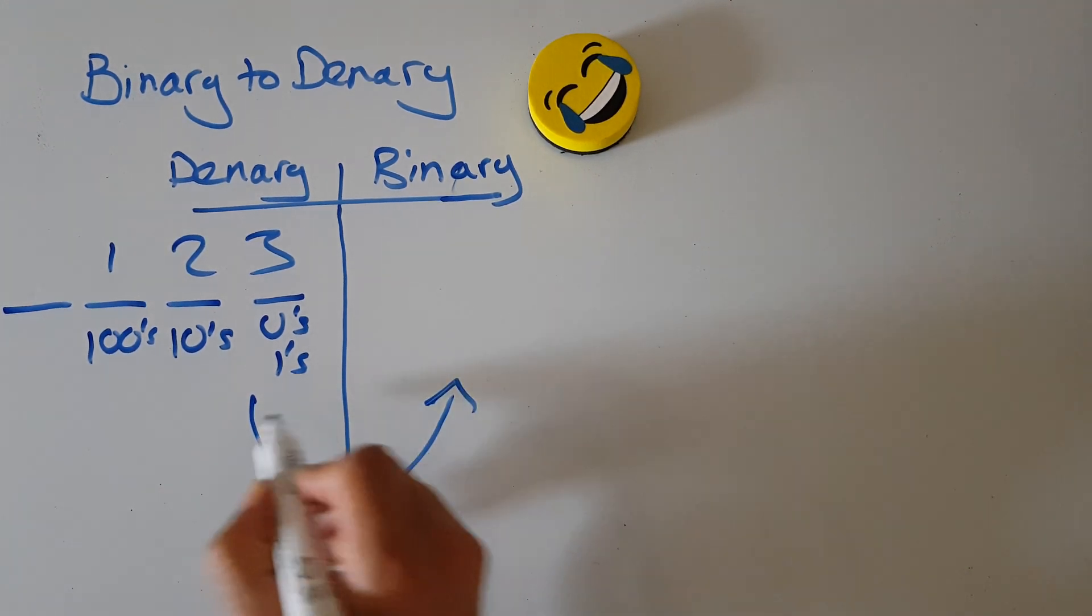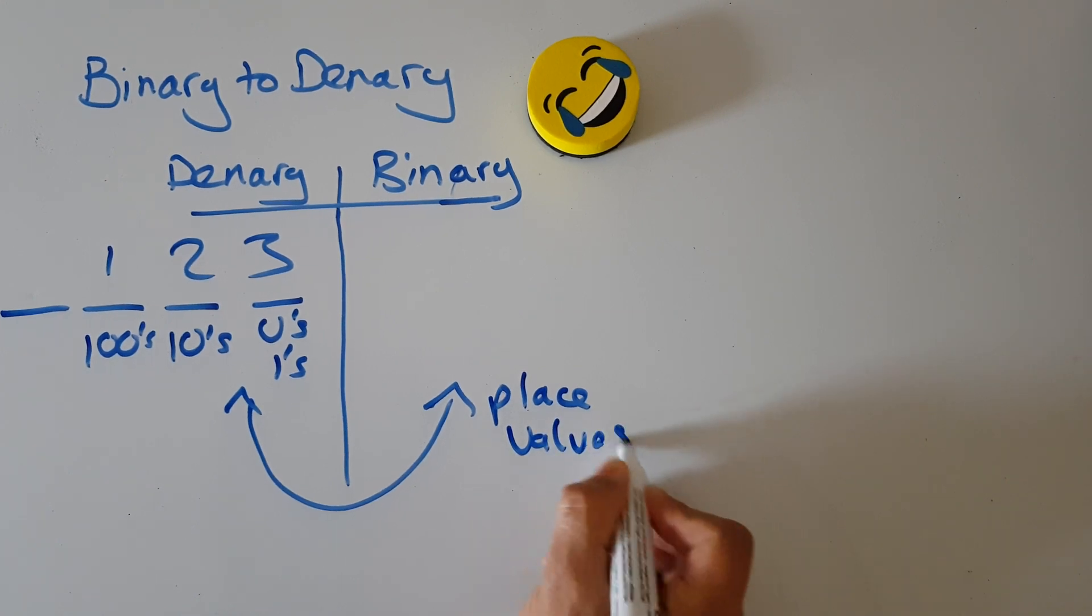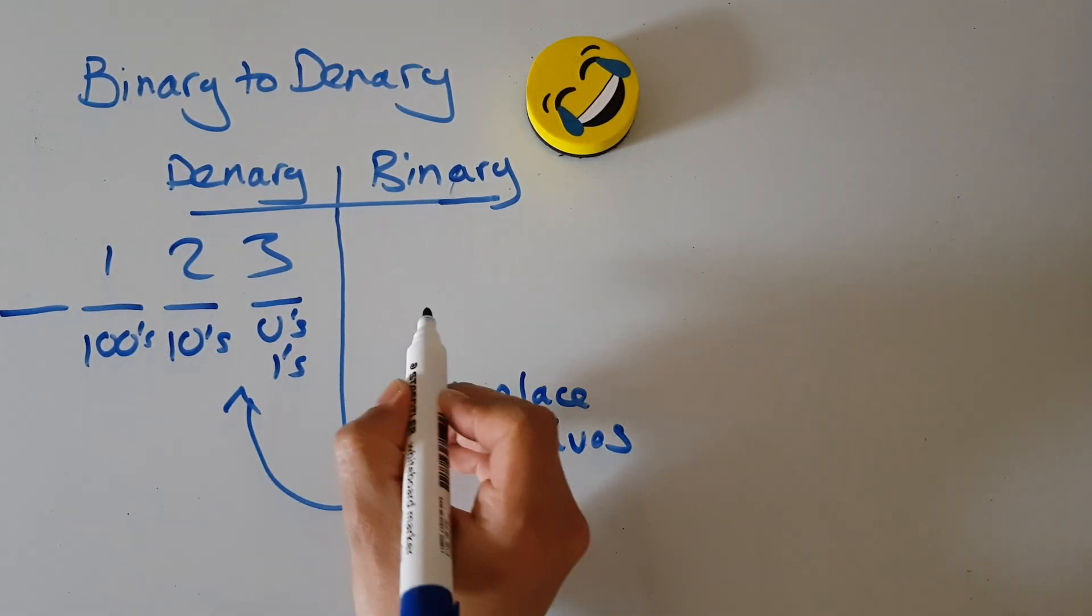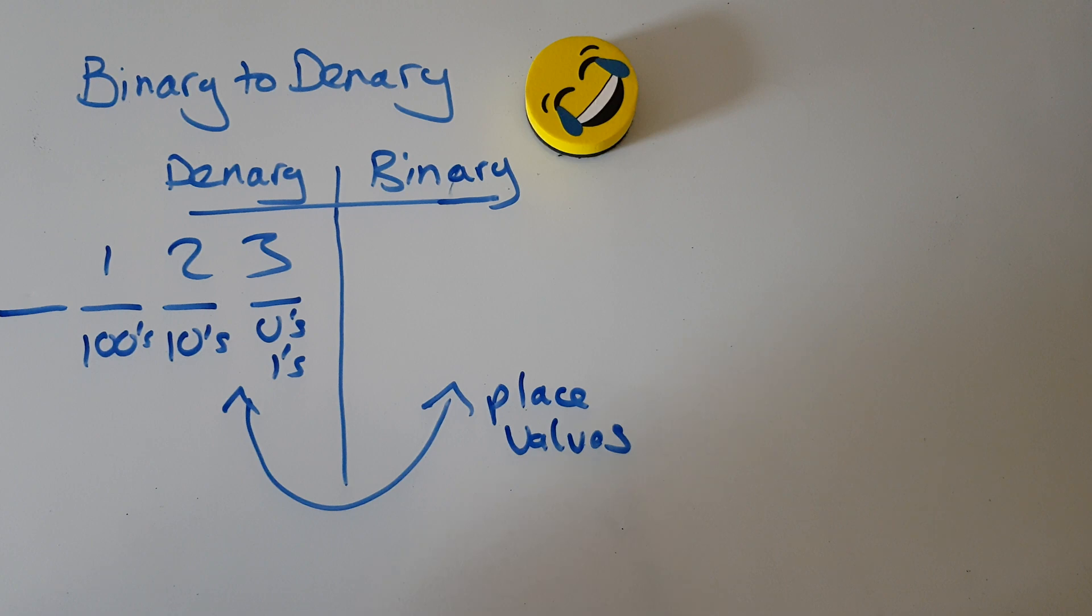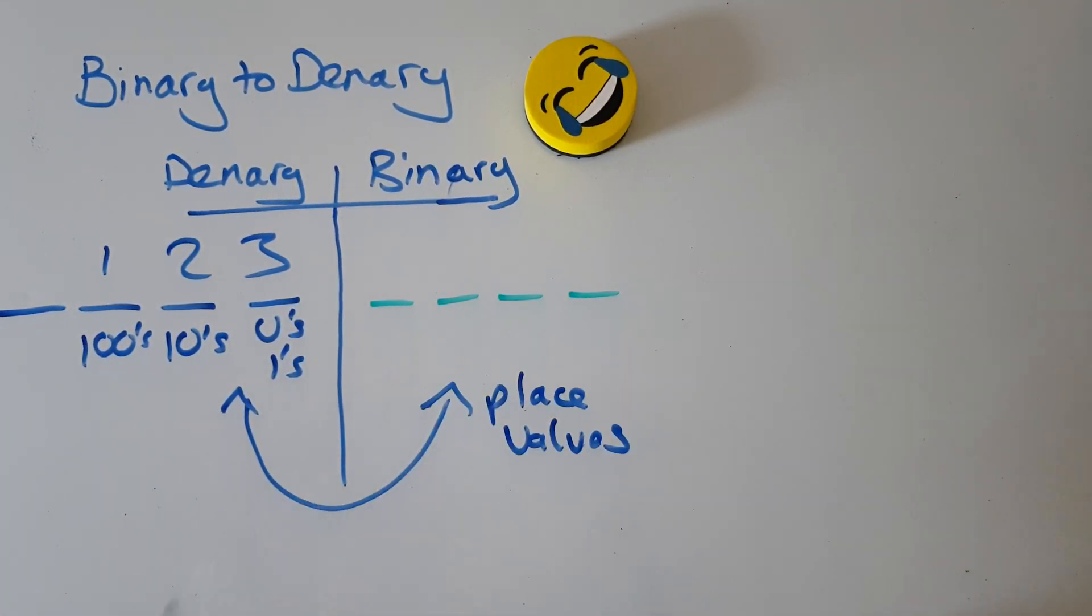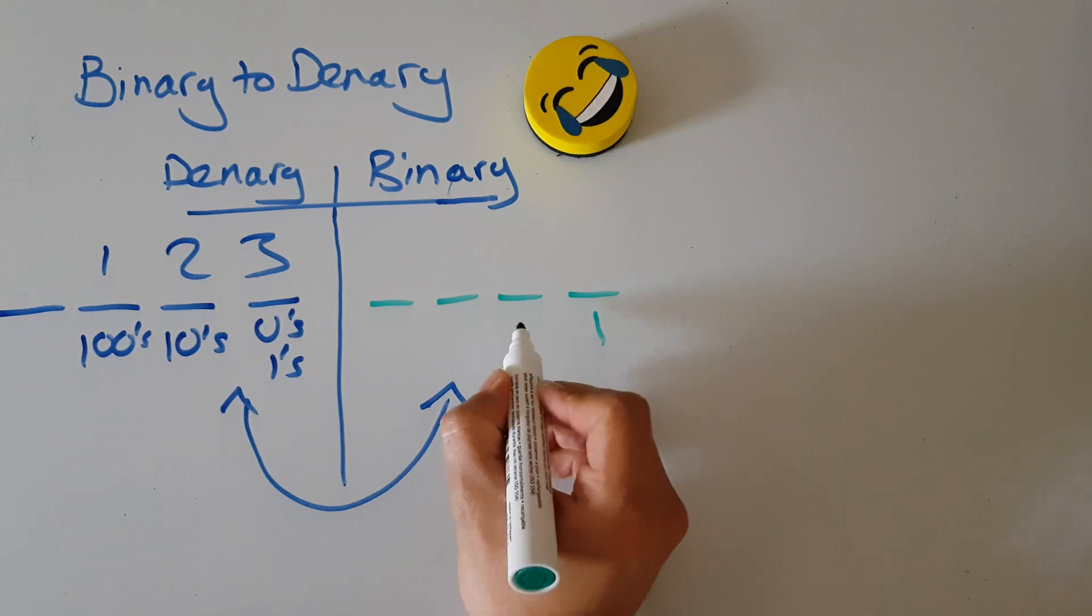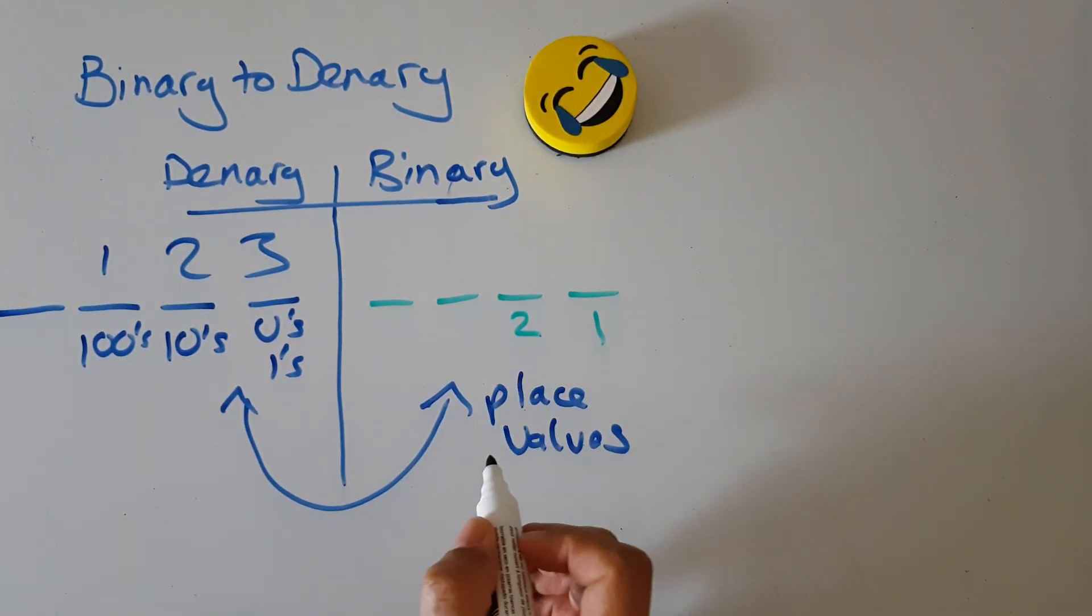Binary also has place values, but not the same ones. Here are the place values in binary: quite simply, the first one is 1, and then we double it and we have 2, and then we double that and we have 4.